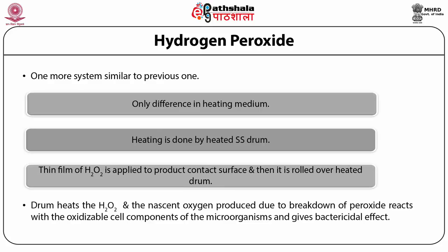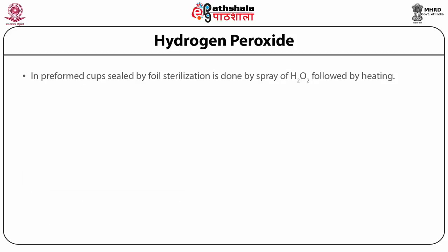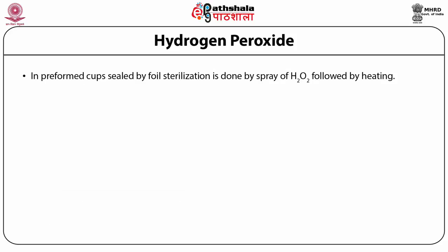Contact with the drum heats the peroxide, and the nascent oxygen produced due to breakdown of the peroxide reacts with the oxidizable cell components of the microorganisms, causing a bactericidal effect. Another system utilizes preformed cups to which a lid foil is heat-sealed after filling. The cups are sterilized by applying a spray of peroxide followed by heating, and the lid material is sterilized by being passed through a bath of hydrogen peroxide.